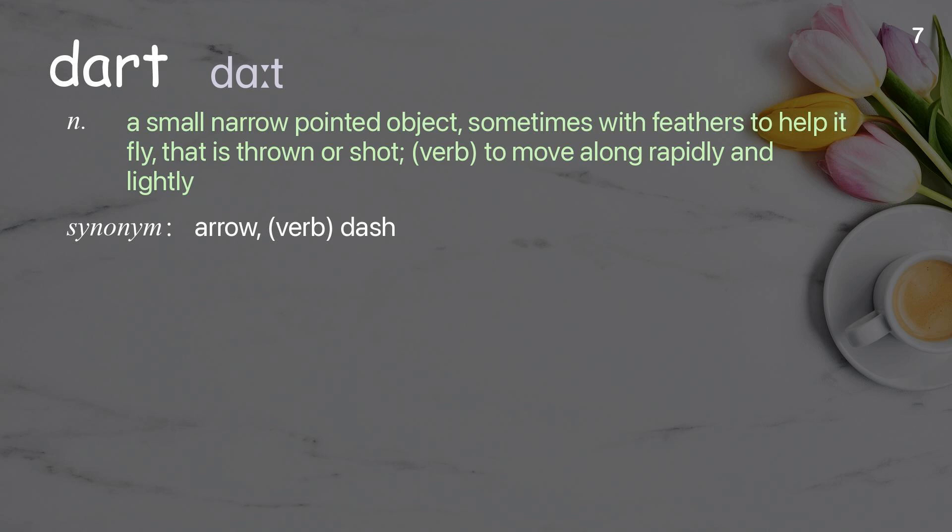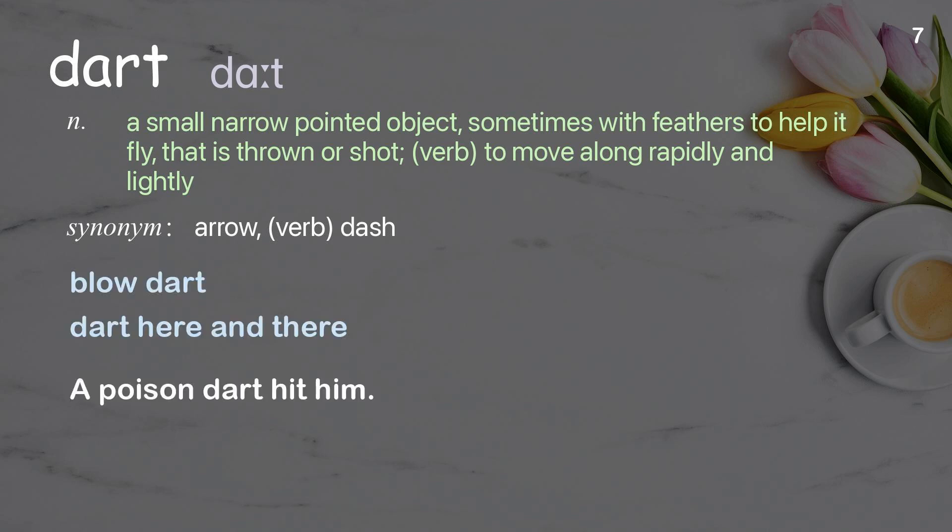Dart: a small, narrow, pointed object, sometimes with feathers to help it fly, that is thrown or shot. Verb: to move along rapidly and lightly. Examples: blow dart, dart here and there. A poison dart hit him.